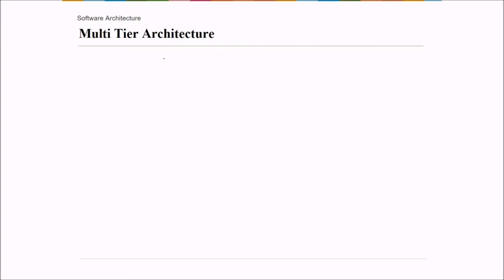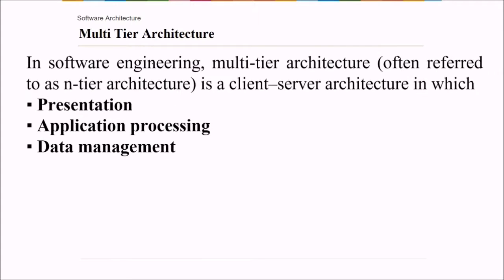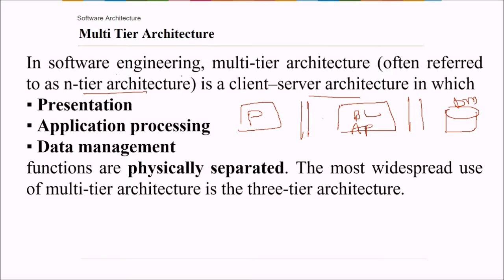What about the architecture terminology? We can have a multi-tier architecture. So in software engineering, this multi-tier architecture, which is also known as the N-tier architecture, is a client-server architecture in which you have a presentation, then application processing or you can call it as business logic representation. So presentation, business logic or application processing and then you have data management. The most widespread use of multi-tier architecture is a three-tier architecture.